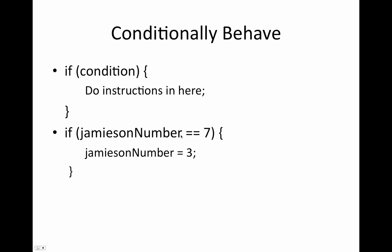So if Jameson number double equals sign seven, Jameson number equals three. So what happens here is if Jameson number is equal to seven, the reason we use two equal signs is because one equal sign means assign the value here to this. So if we were to say if Jameson number one equal sign seven, what it would do is it would actually, it wouldn't even bother comparing the two, it would just put a seven in Jameson number and carry on.